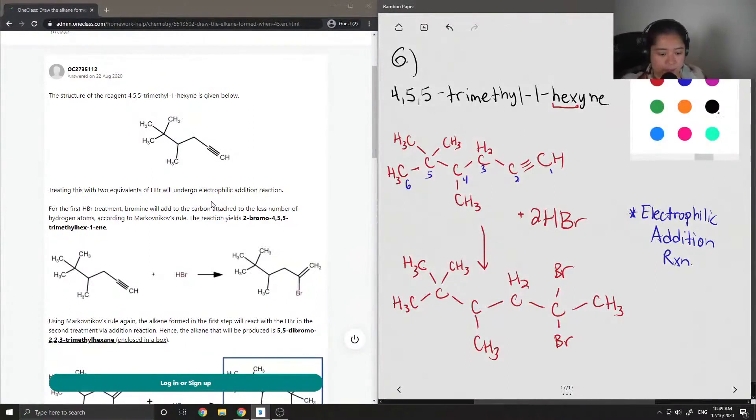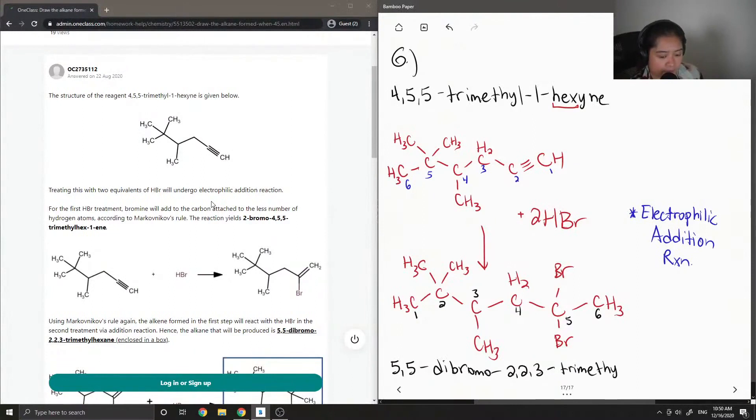So if we were to name this compound, let's number it again. But this time, so we have less numbers involved. Actually, I think there would be less numbers if we numbered it from the left. We have two bromines on carbon-5, so it would be 5,5-dibromo. And then on carbon-2 and carbon-3, there are methyl groups. So 2,2,3-trimethylhexane.